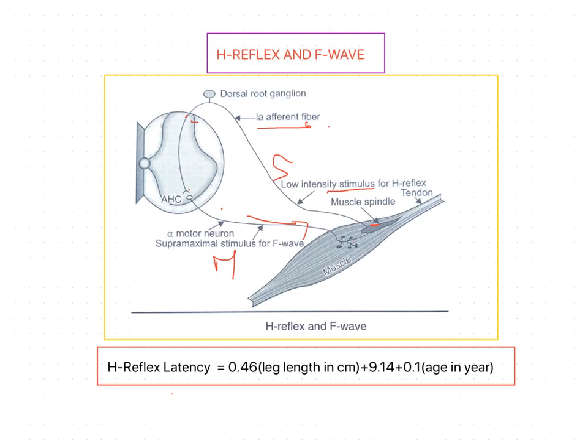The normal response falls within plus or minus 5.5 milliseconds of this calculated latency. An average response is 29.8 milliseconds plus or minus 2.74 milliseconds. A slowed latency is indicative of abnormal dorsal root function.